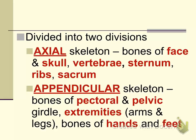The skeletal system is divided into two major areas. The axial skeleton is made up of the bones of the face, the skull, the vertebrae or the spine, the sternum which is the breast bone, the ribs, and the sacrum which is the bone that makes up the small of the back.